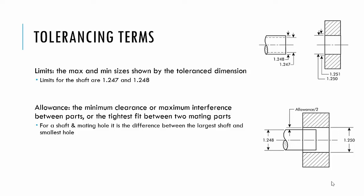Allowance is the minimum clearance or the maximum interference. The way we would figure out the allowance is we would take the largest allowable shaft and the smallest hole. The hole can be as small as 1.250, the shaft could be as large as 1.248, so the allowance would be 0.002.